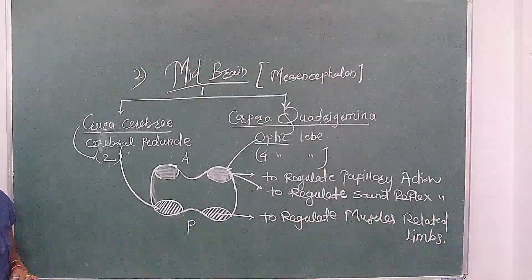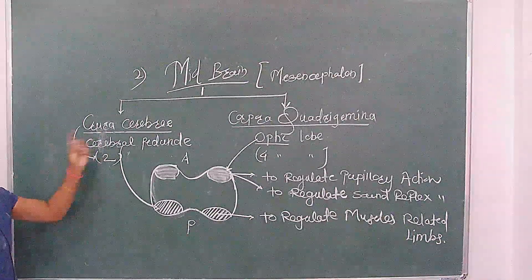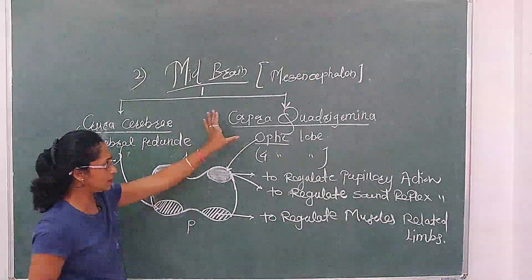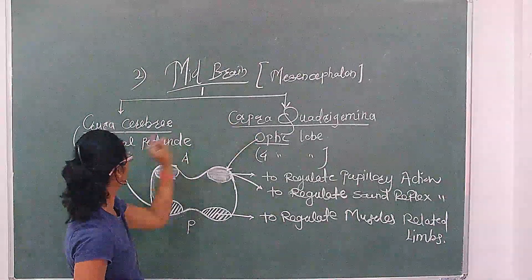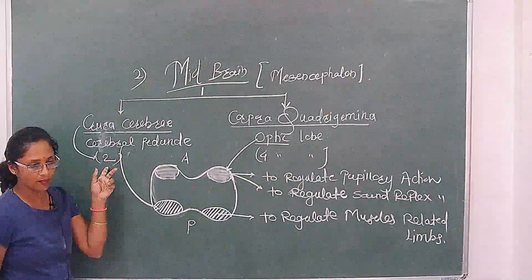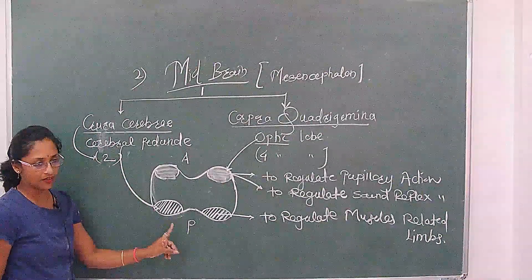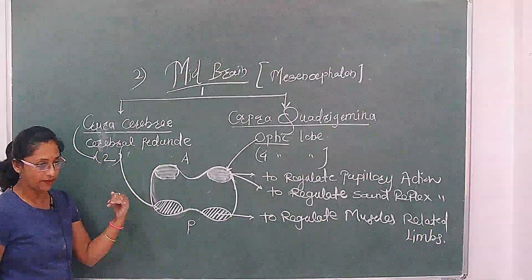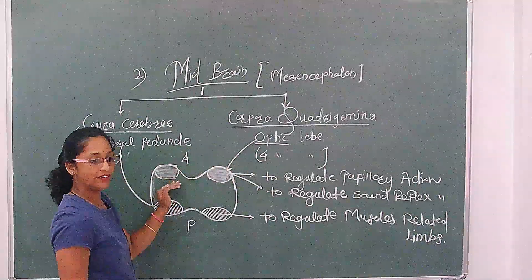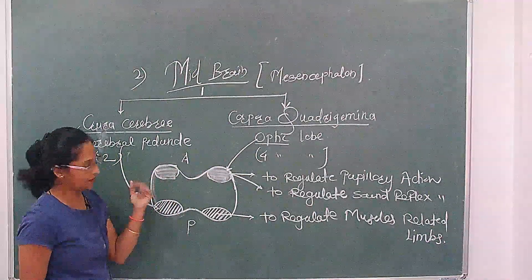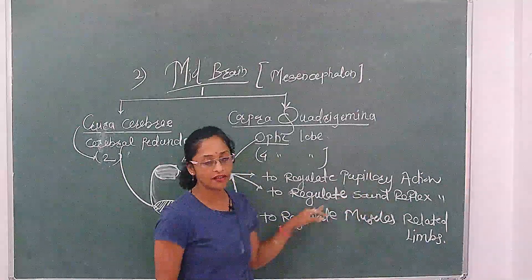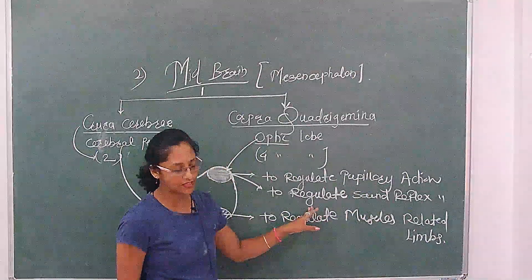Summary: Midbrain is also called mesencephalon. It has two parts: crura cerebri and corpora quadrigemina. Crura cerebri is also called cerebral peduncle — two in number, located at the posterior side of the midbrain. Corpora quadrigemina is also called optic lobe — four in number, located at the anterior side of the midbrain. Functions include regulating pupillary action and sound reflex action.